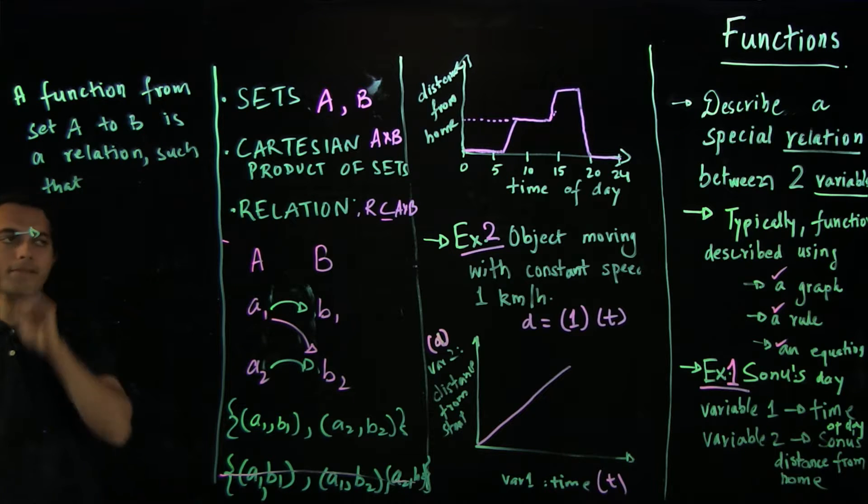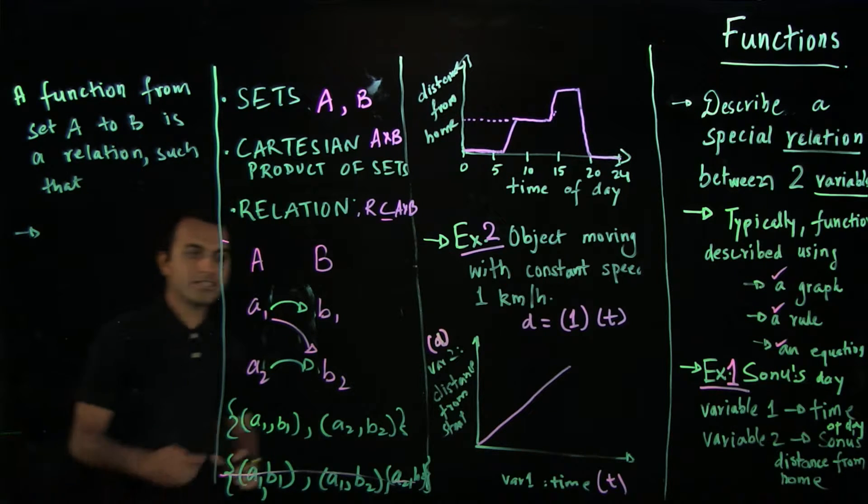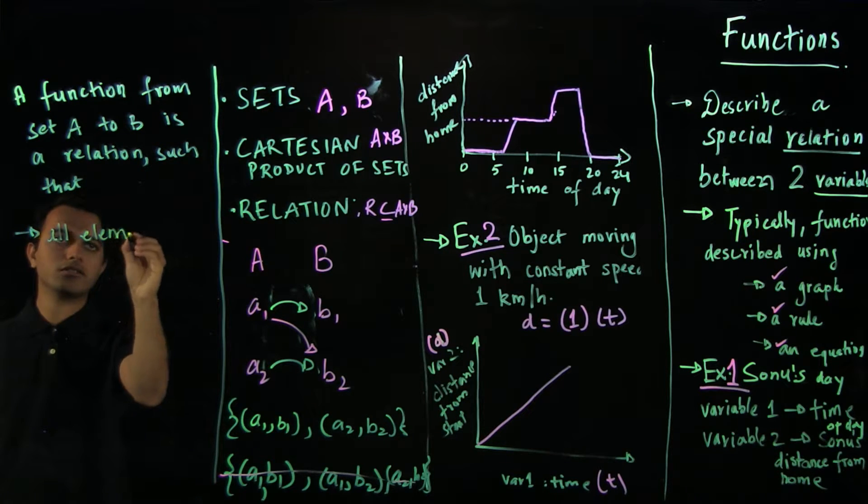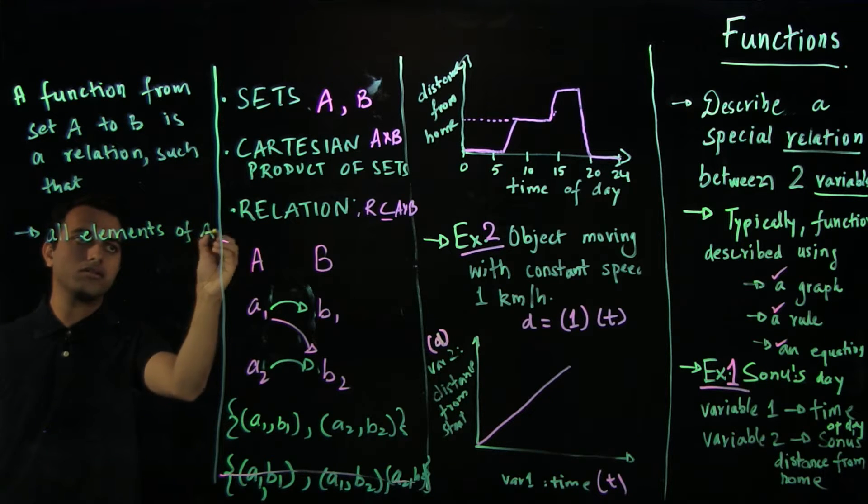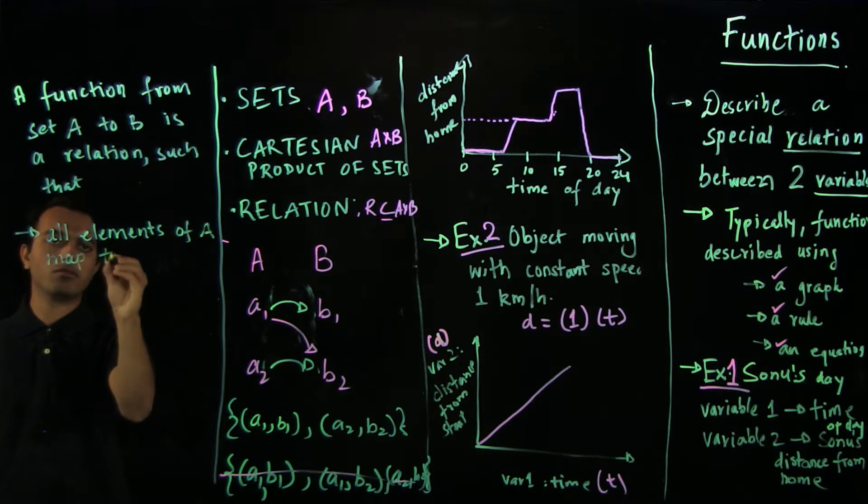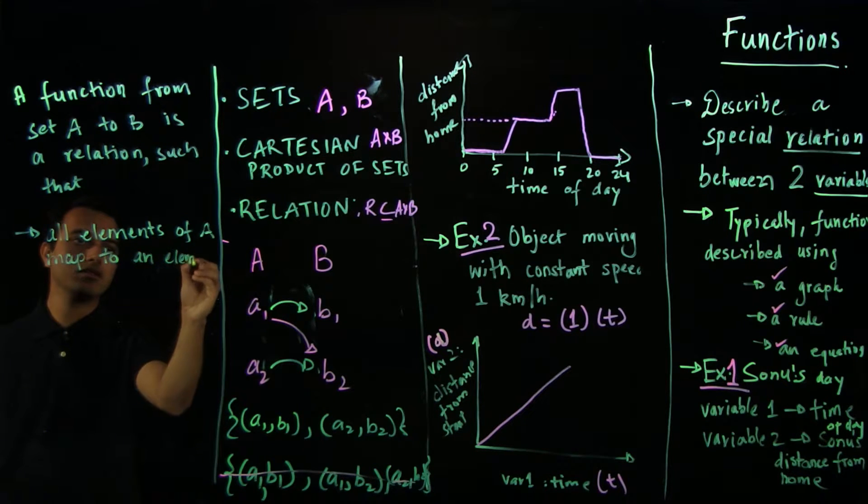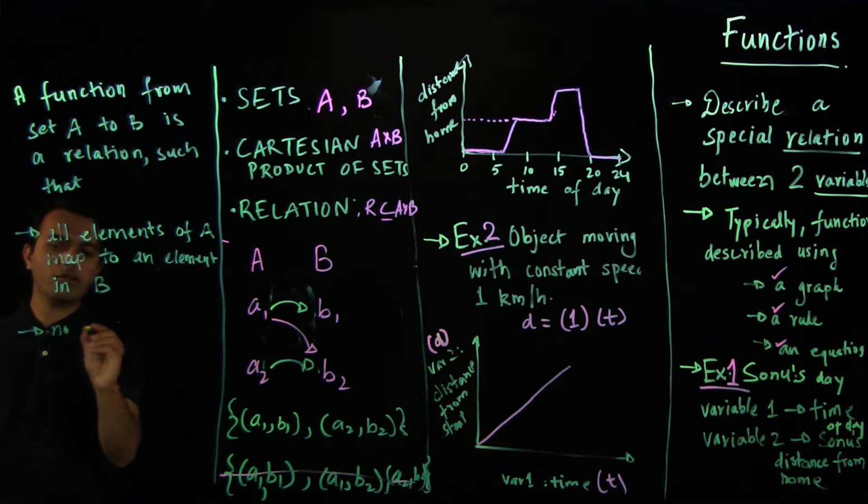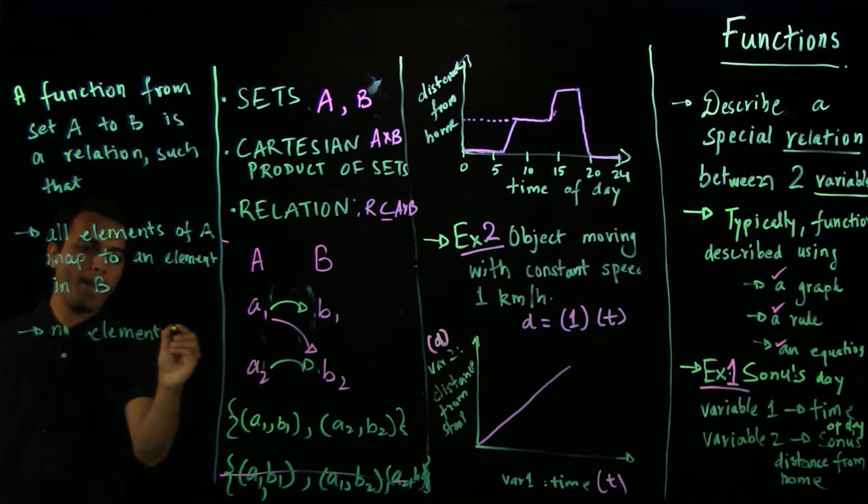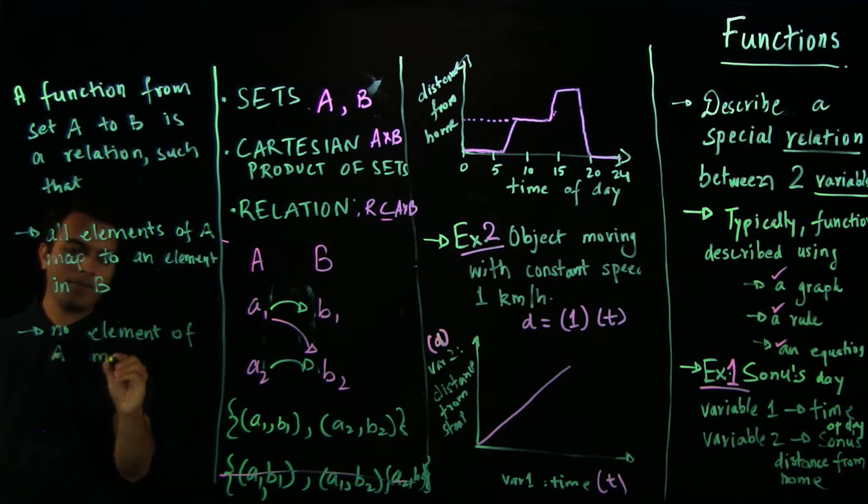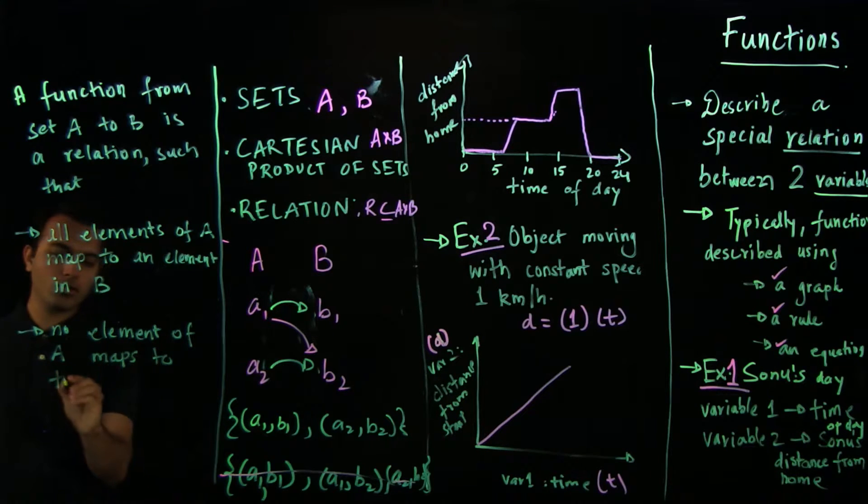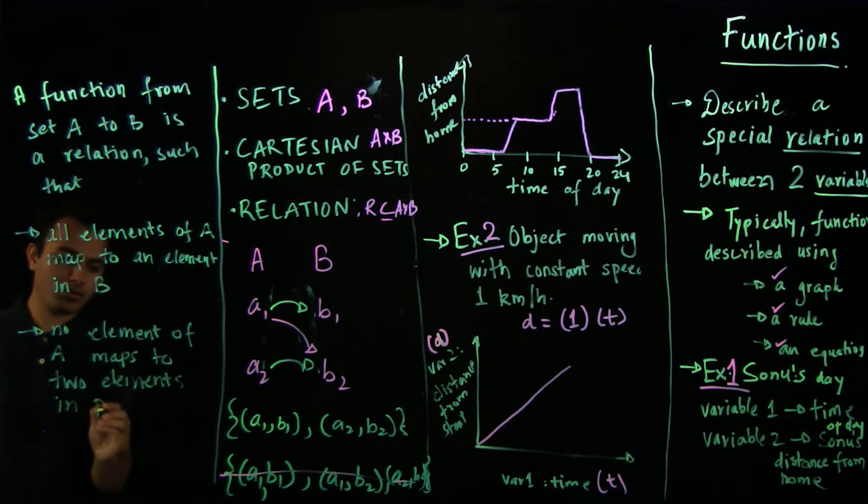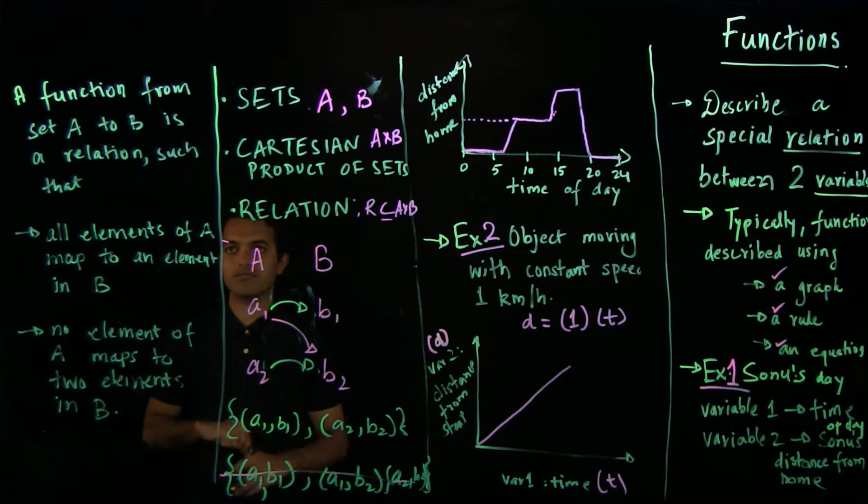so we have to satisfy two properties. First, all elements of A map to an element in B. And no element of A maps to two elements in B. So that is our mathematically precise definition of functions.